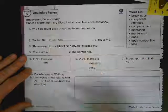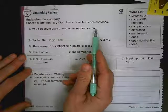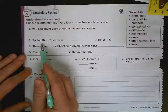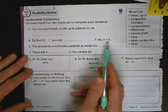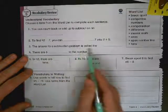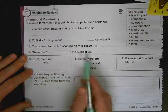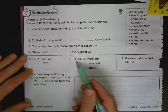You can count back or up to subtract. And to find 42 minus 7, you can blank 7 into 2 and 5. The answer to a subtraction problem is called the... Start crossing them out. There are 6 blank in the number 36. Use these words.